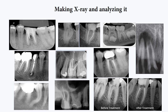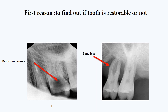The first reason is to find out if the tooth is restorable or not. Many reasons can make a tooth non-restorable. The first one is bifurcation perforation and caries — like in the first X-ray. If you look carefully, you will see that caries extends too deep into the bifurcation, so this tooth is obviously non-restorable. Secondly, severe bone loss due to periodontal disease, like in the second picture. In these cases, X-ray facilitates our treatment planning and saves our time.